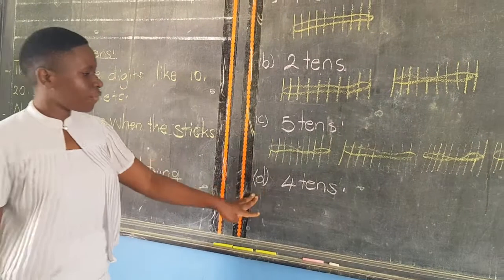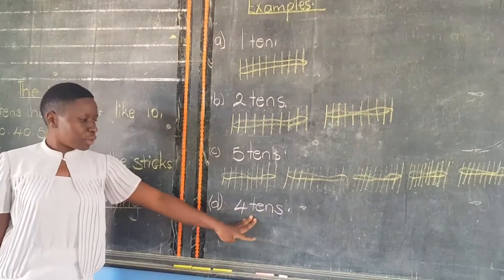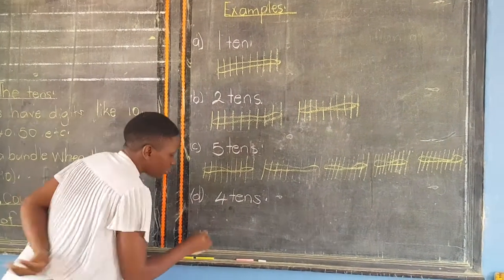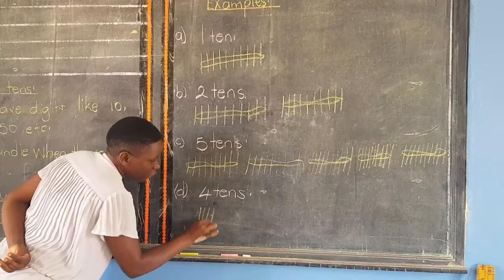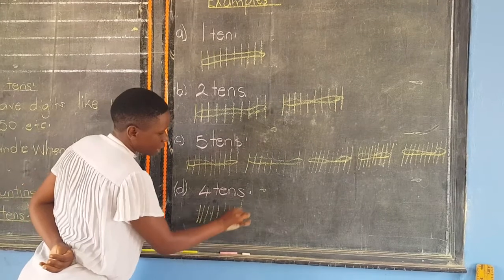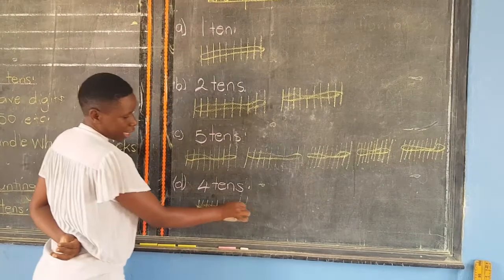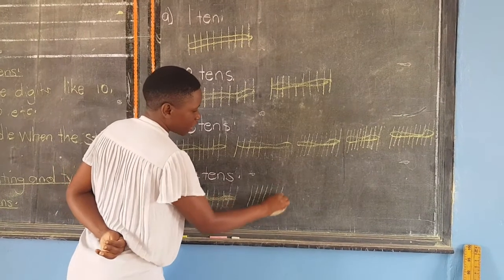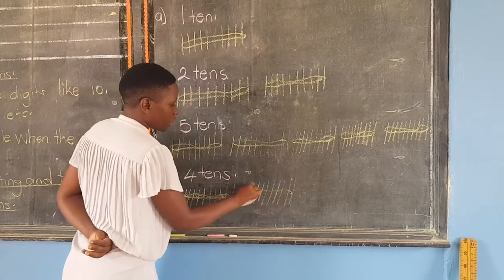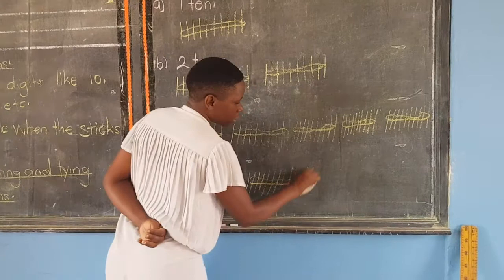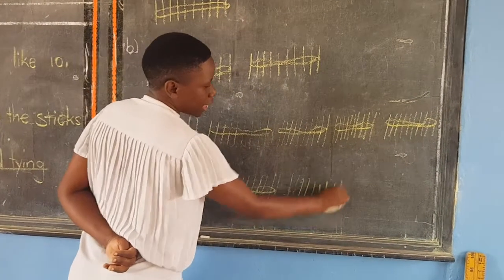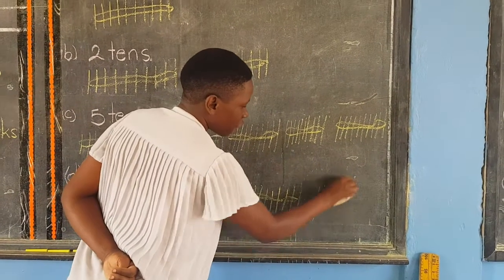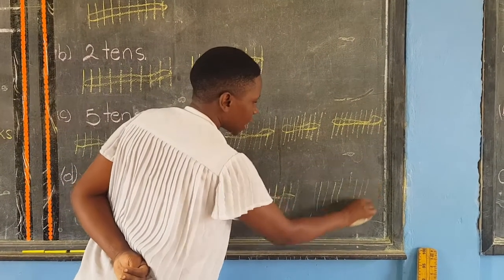Then lastly, we have four tens — meaning you are going to draw bundles of tens, four of them. We count very fast: one, two, three, four, five, six, seven, eight, nine, ten — tie. One, two, three, four, five, six, seven, eight, nine, ten — tie. One, two, three, four, five, six, seven, eight, nine, ten — tie. And lastly, one, two, three, four, five, six, seven, eight, nine, ten.